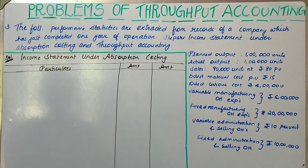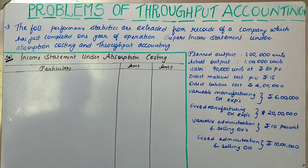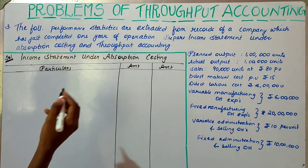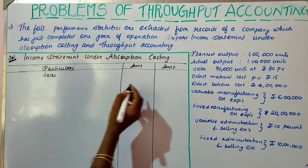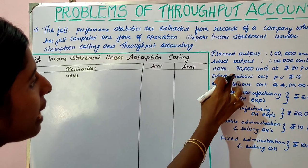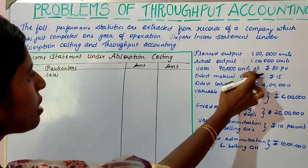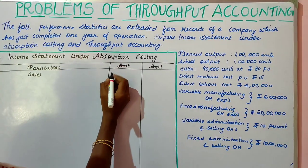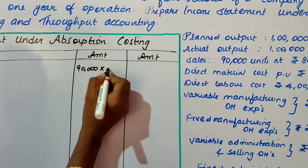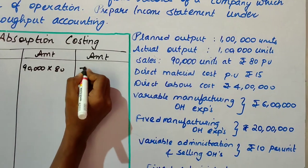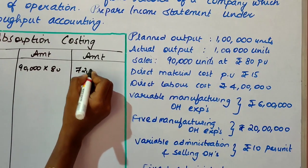We are going to prepare the income statement using absorption costing. We will start with sales. Sales given is 90,000 units at 80 per unit.